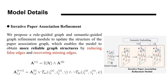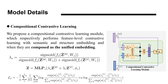For the Iterative Paper Association Refinement module, we proposed a rule-guided graph and semantic-guided graph refinement model to update the graph, which enables the model to obtain a more reliable graph structure by reducing false edges and recovering missing edges.